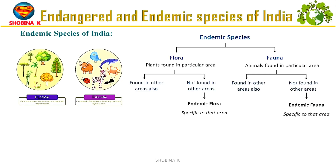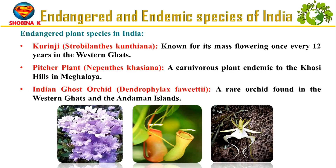Endemic species of India include both flora and fauna. Flora describes plant species including trees, shrubs, herbs, grasses, ferns, mosses and microorganisms. Fauna refers to animals in a particular region, and together flora and fauna make up the biota of an ecosystem. Fascinating endemic plant species under threat include Kurinji, pitcher plant and Indian ghost orchid, threatened by habitat destruction, over-exploitation and climate change.